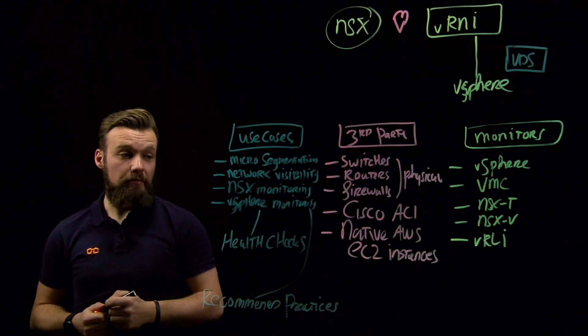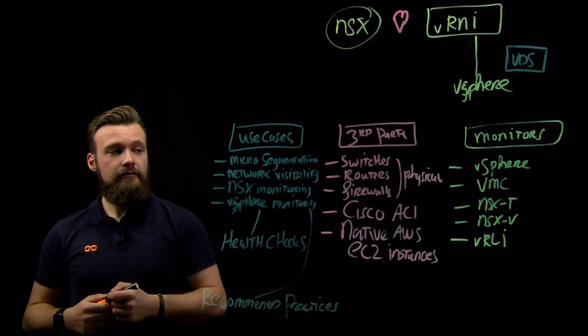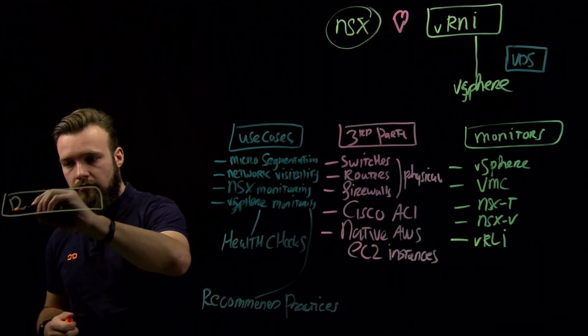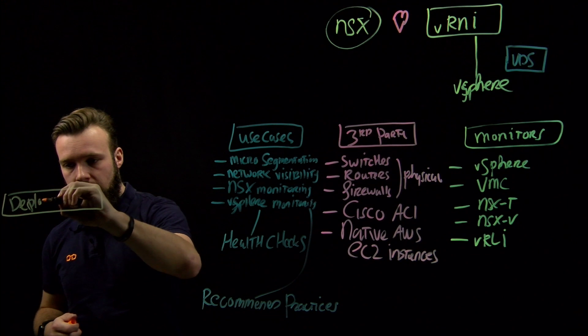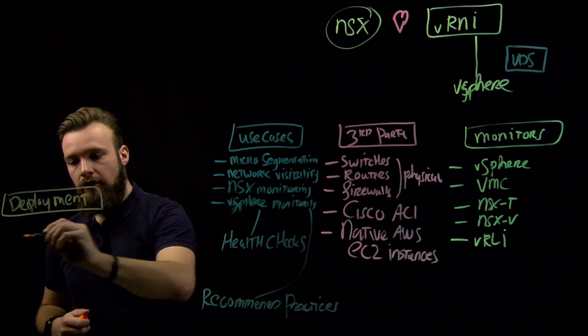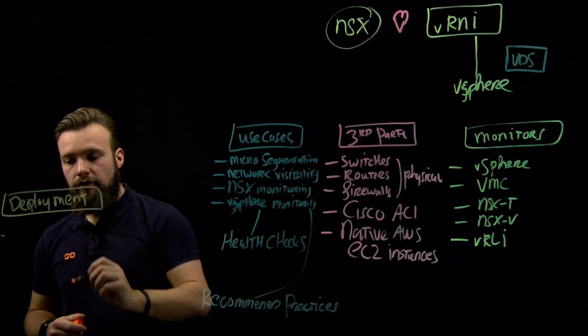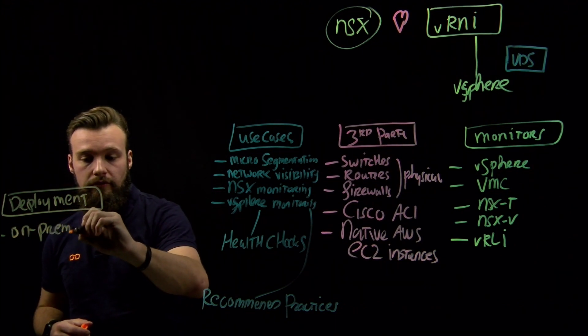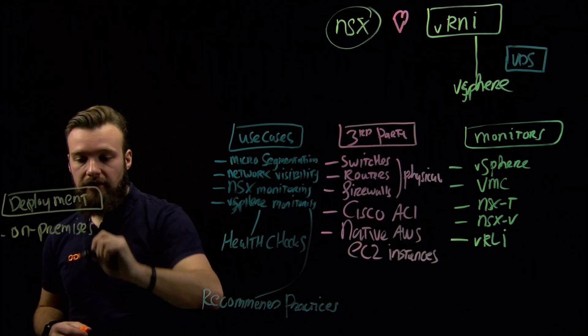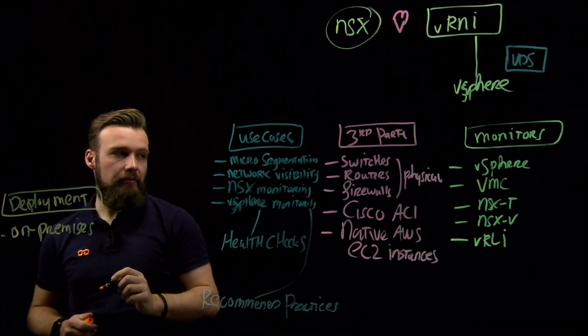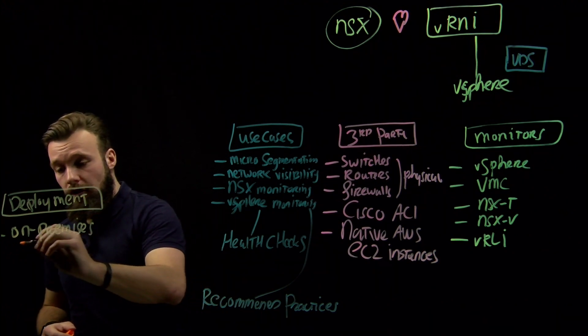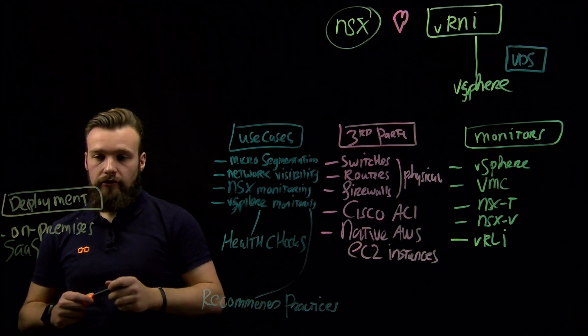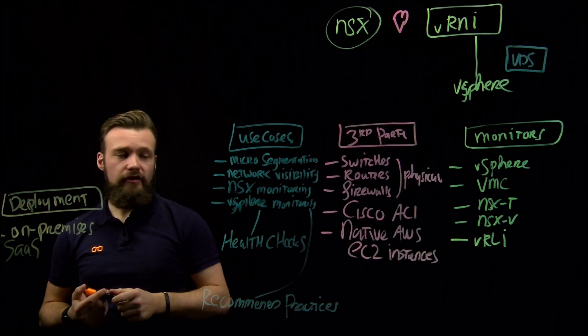But you also need to deploy VRNI somewhere. For this, you have two options. You can use VRNI on-premises. Then you need to deploy two specific VMs which are acting as a proxy and a platform VM in VRNI. Or you can choose to use the software as a service solution from VMware, which runs in the VMware cloud.